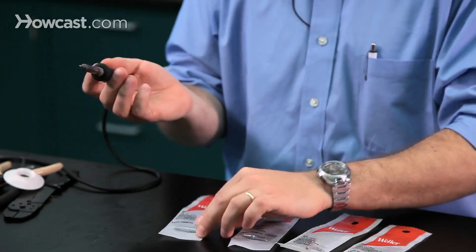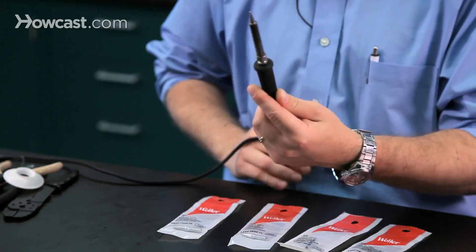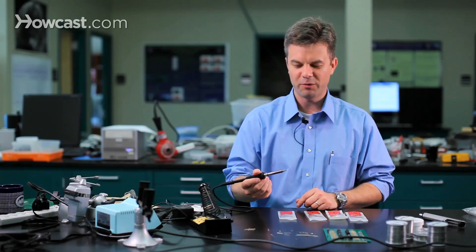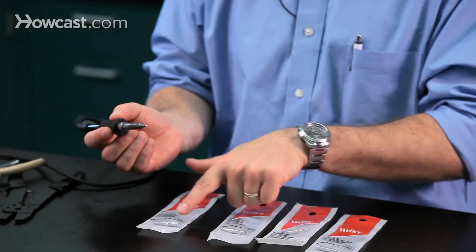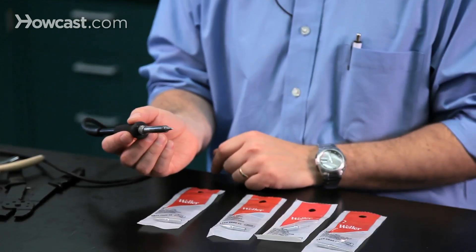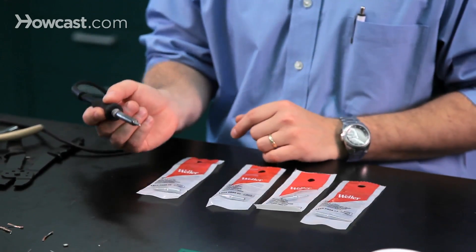These tips are interchangeable by unscrewing the barrel on the iron. Starting out, you probably only need the tip that comes with the iron. It's typically a tip like this, or maybe slightly larger, a screwdriver tip, and that's good for general purpose use.